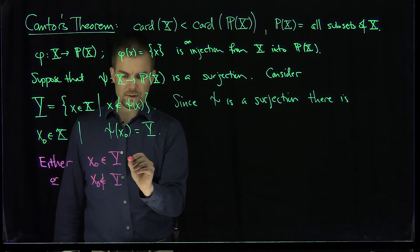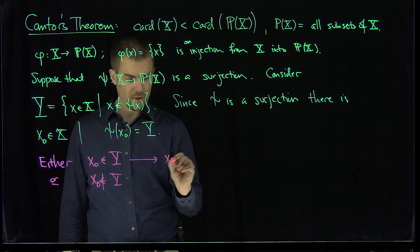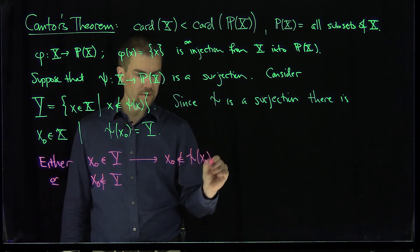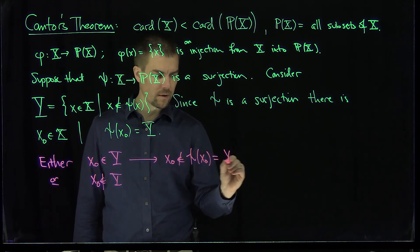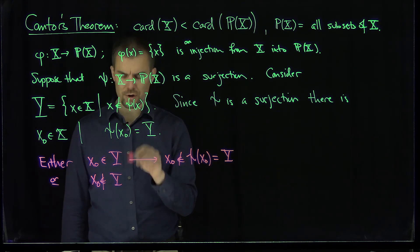Now if X0 is in Y, this implies that X0 is not in Psi of X0, but Psi of X0 is equal to Y. So the first condition says that if X0 is in Y, then X0 is not in Y. Not good.